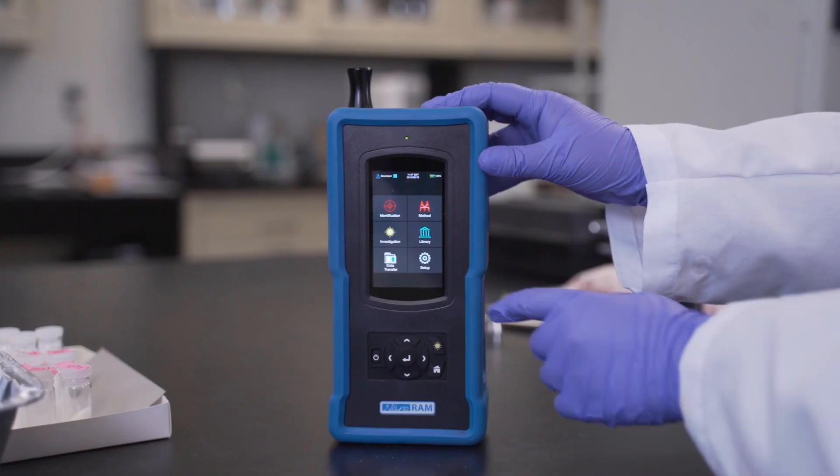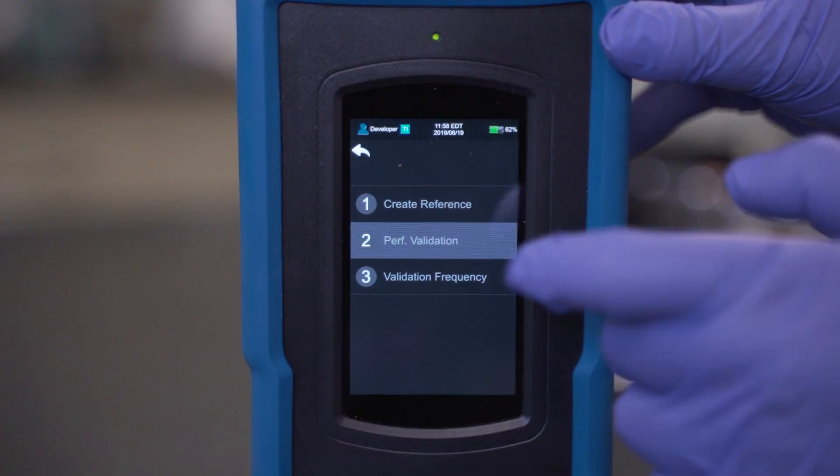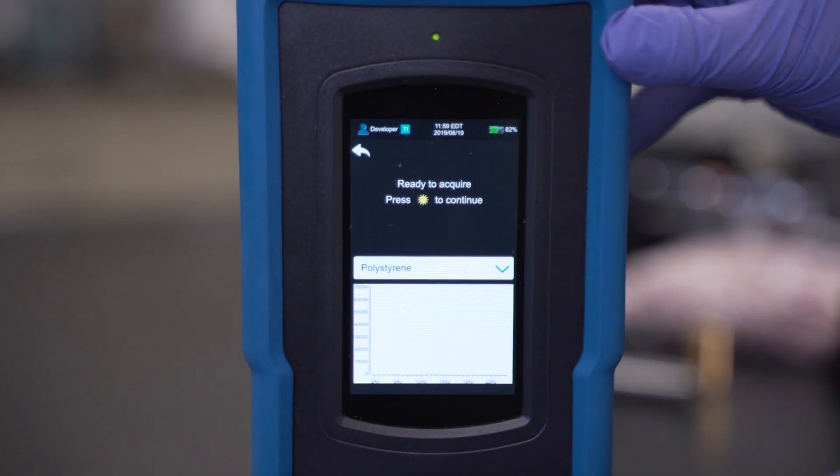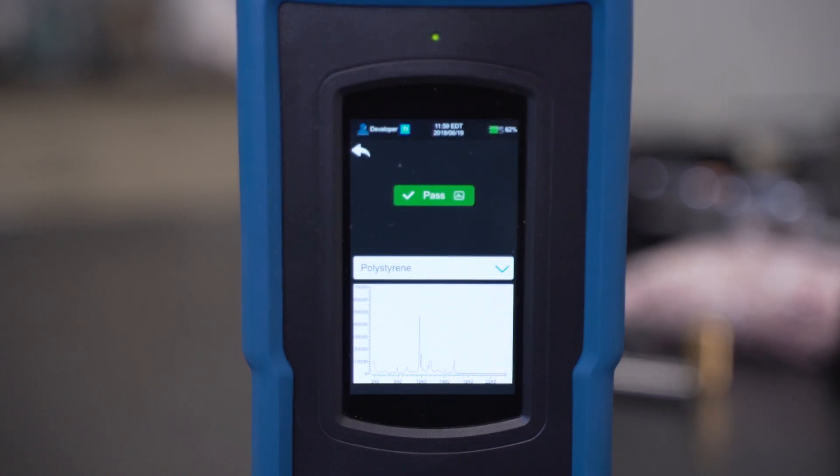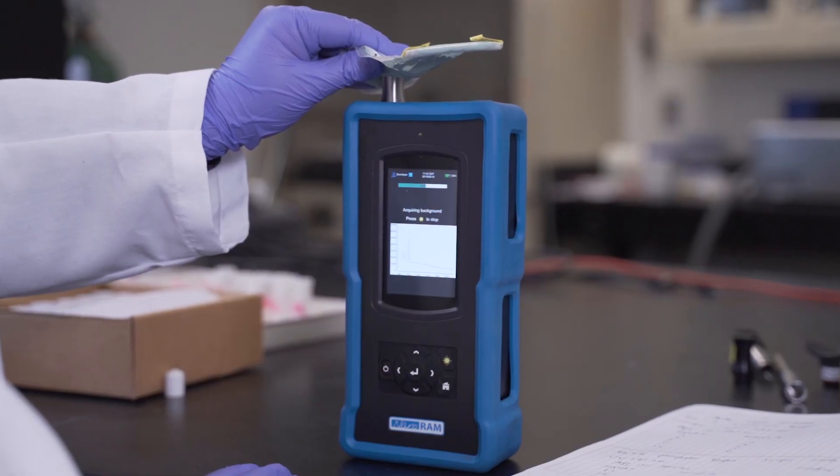An onboard calibration functionality ensures that the NanoRAM 1064 stays compliant with the Raman shift tolerances required by the pharmacopeias, with just a scan of the polystyrene validation cap, minimizing disruptions caused by removing the device from the production environment for factory recalibration.